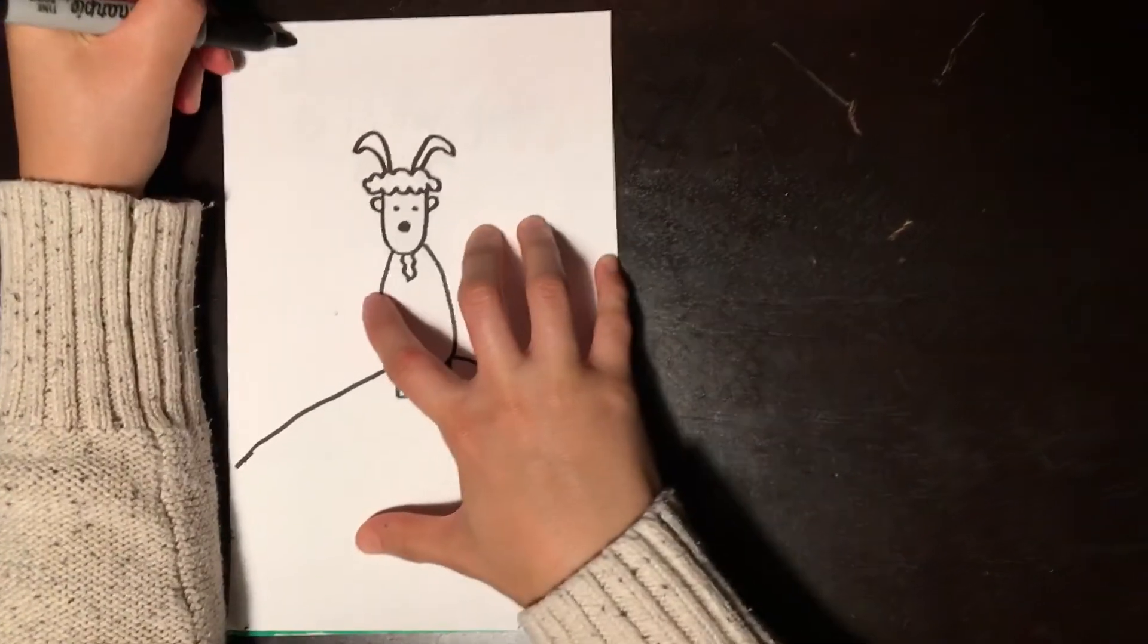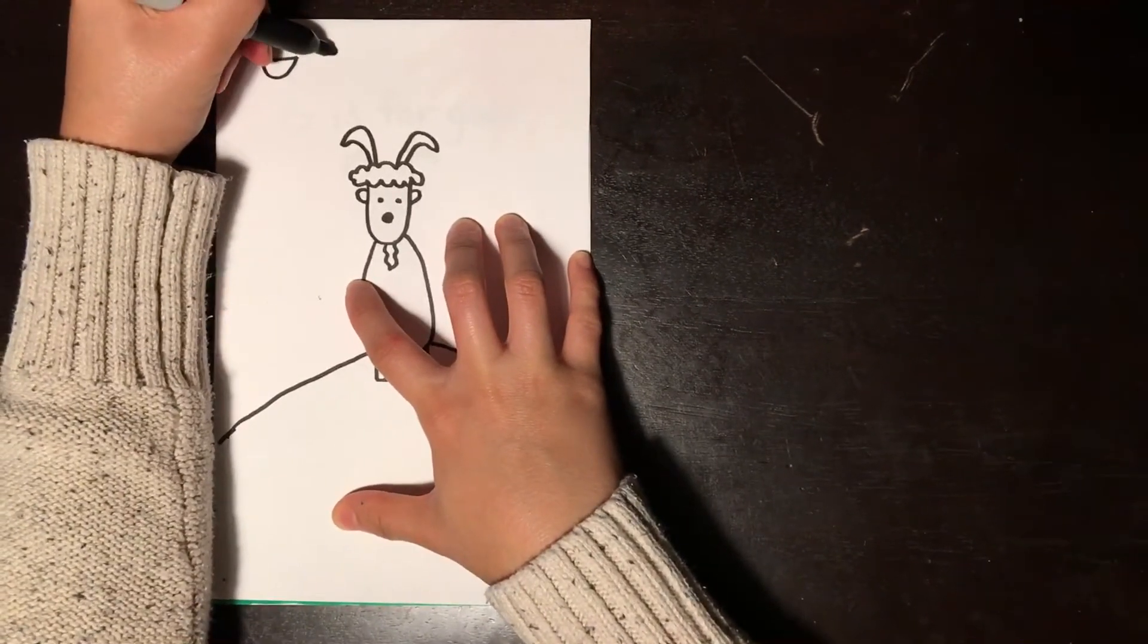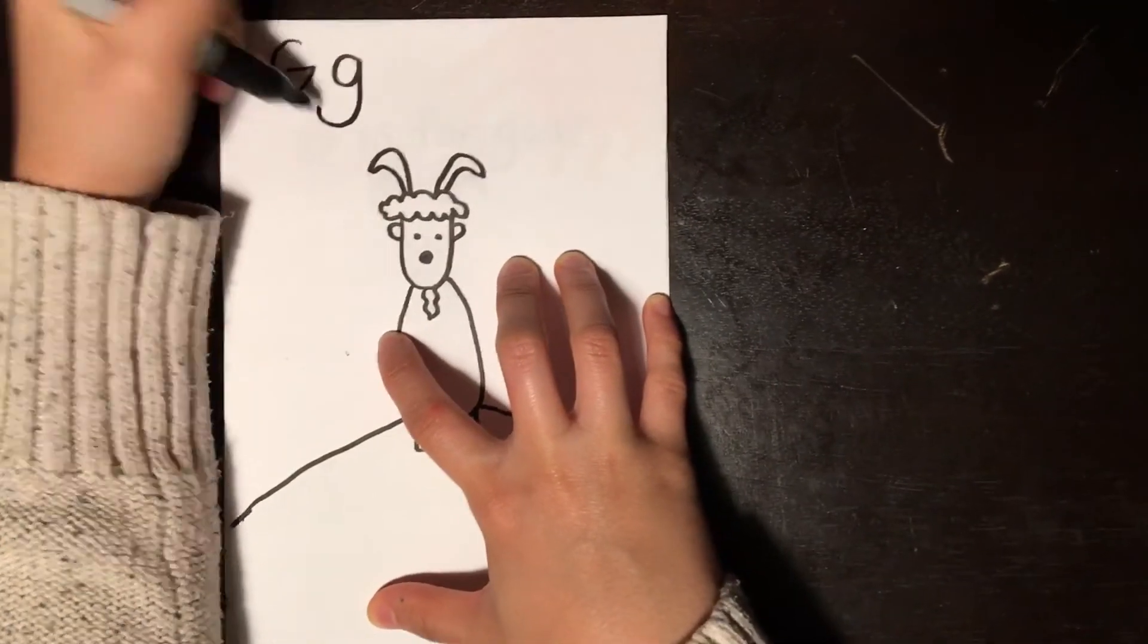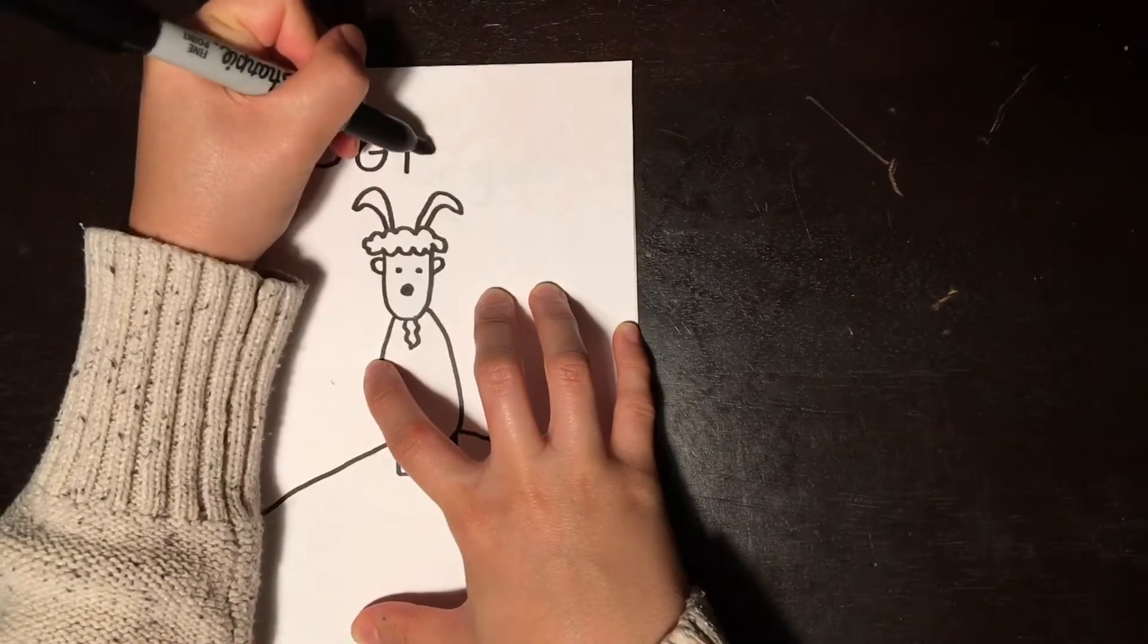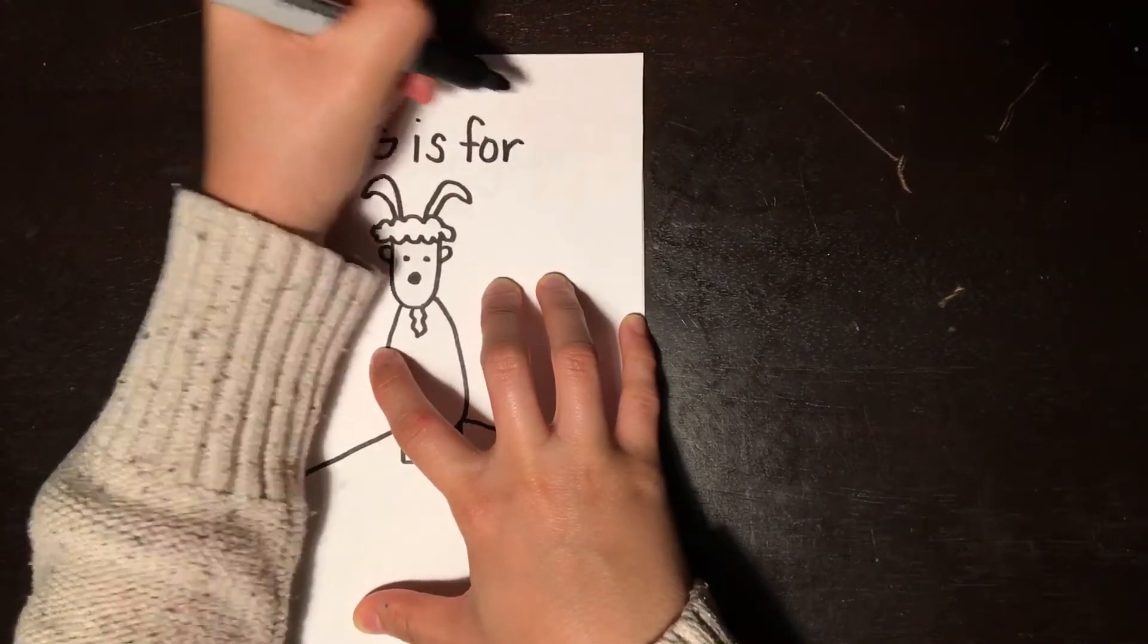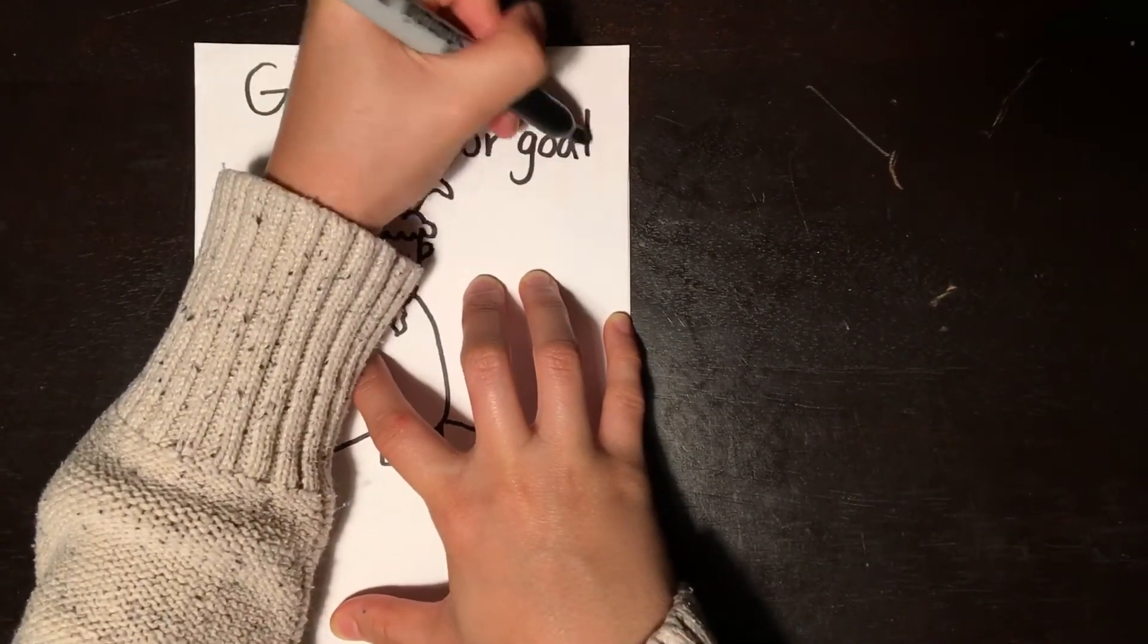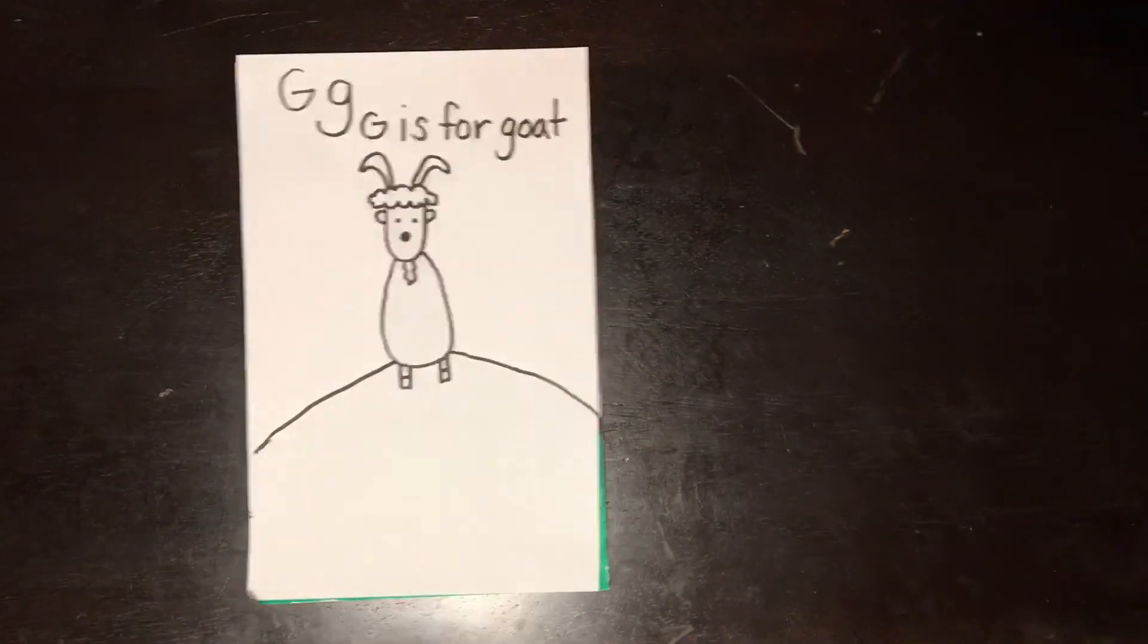And then I'm gonna write at the top of my paper G. Remember to do our lowercase g is circle. I'm coming down. And then I'm gonna write G is for goat. And if you want to try to practice your writing you can go ahead and write it like I did.